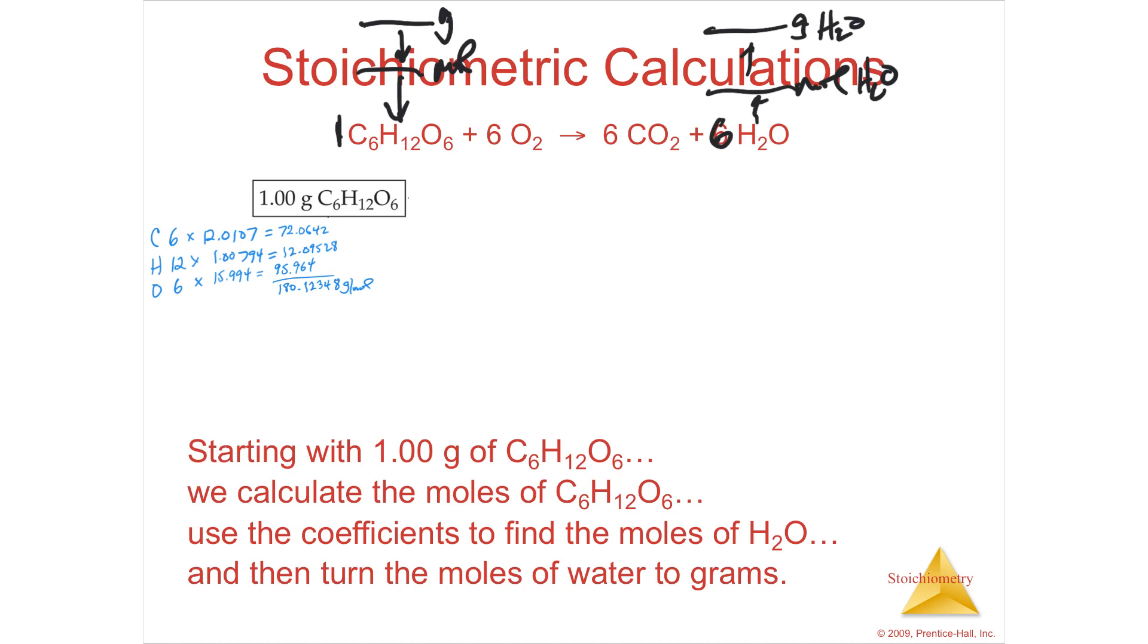Added them all up, and I got 180.12348 grams per mole. That is the molar mass of sugar. I need to know, if I've got 1 gram of sugar, how many moles of sugar that's going to be. If I have 180.12348 grams for every mole, then I have 0.005551747 moles of sugar.